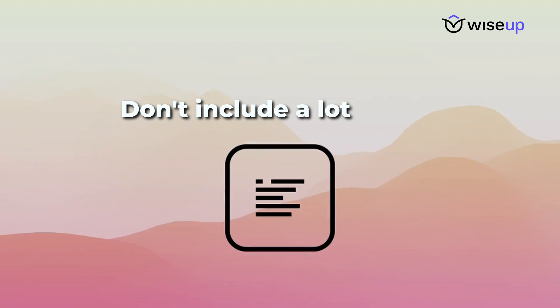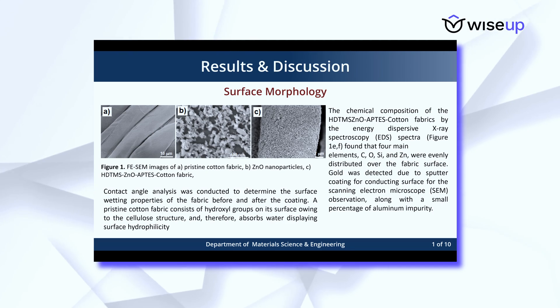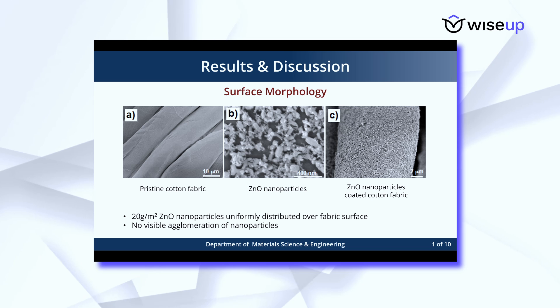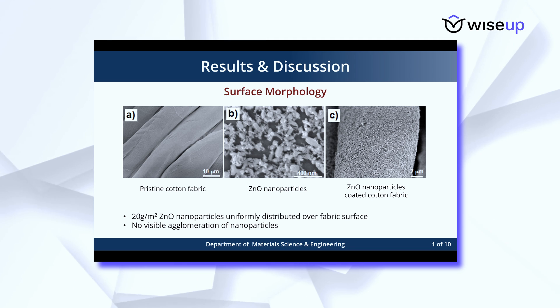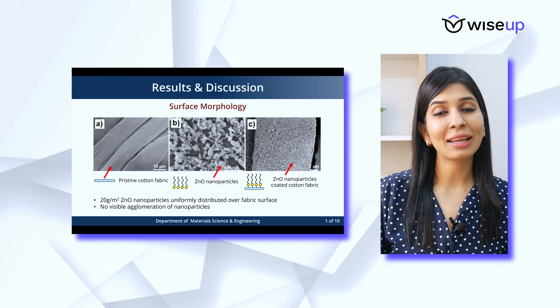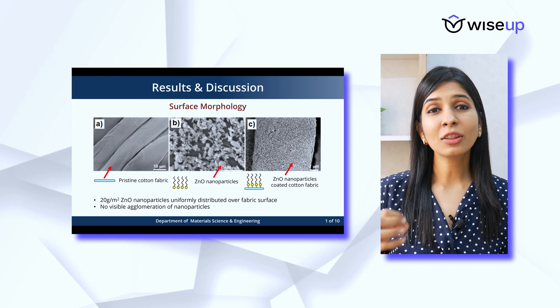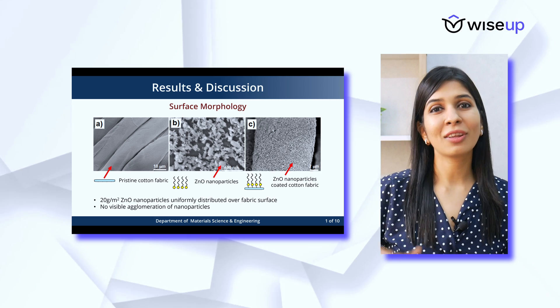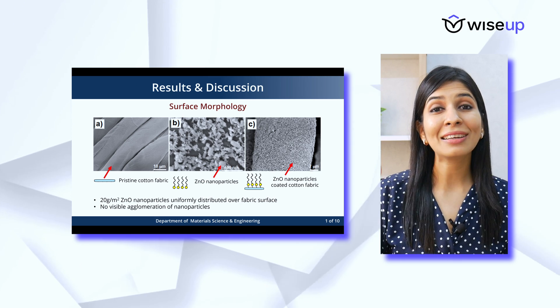Another important thing when designing presentations is to not include a lot of text. Nobody is going to read so much text off a slide. So instead of copying paragraphs from a research paper, try to deliver your story through pictures with only the key insights and key results shared in the form of text. This will make your slides more clean and easy to follow. You can also add labellings to highlight the most important parts in your images so that the audience immediately understands the most important takeaway.